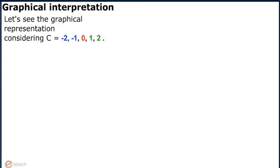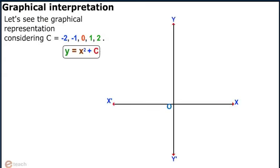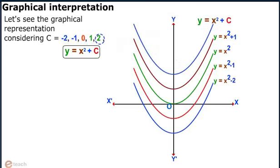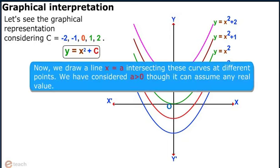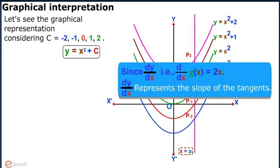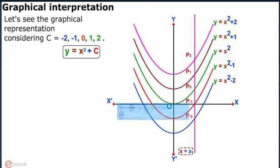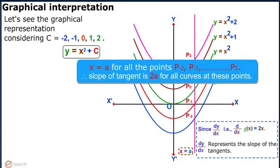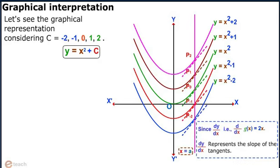You can see the graphs for values of c equals minus 2, minus 1, 0, 1, and 2. Clearly, all these curves are similar. Now we draw a line x equals a intersecting these curves at different points. We have considered a greater than 0, though it can assume any real value. Since dy/dx, i.e., d/dx of g(x) equals 2x, dy/dx represents the slope of the tangents at x equals a, for all points p(−2), p(−1) up to p(2). Therefore the slope of the tangent is 2a for all curves at these points, and the tangents are parallel. Note that the antiderivative forms a family of curves having equal slope at a given x.